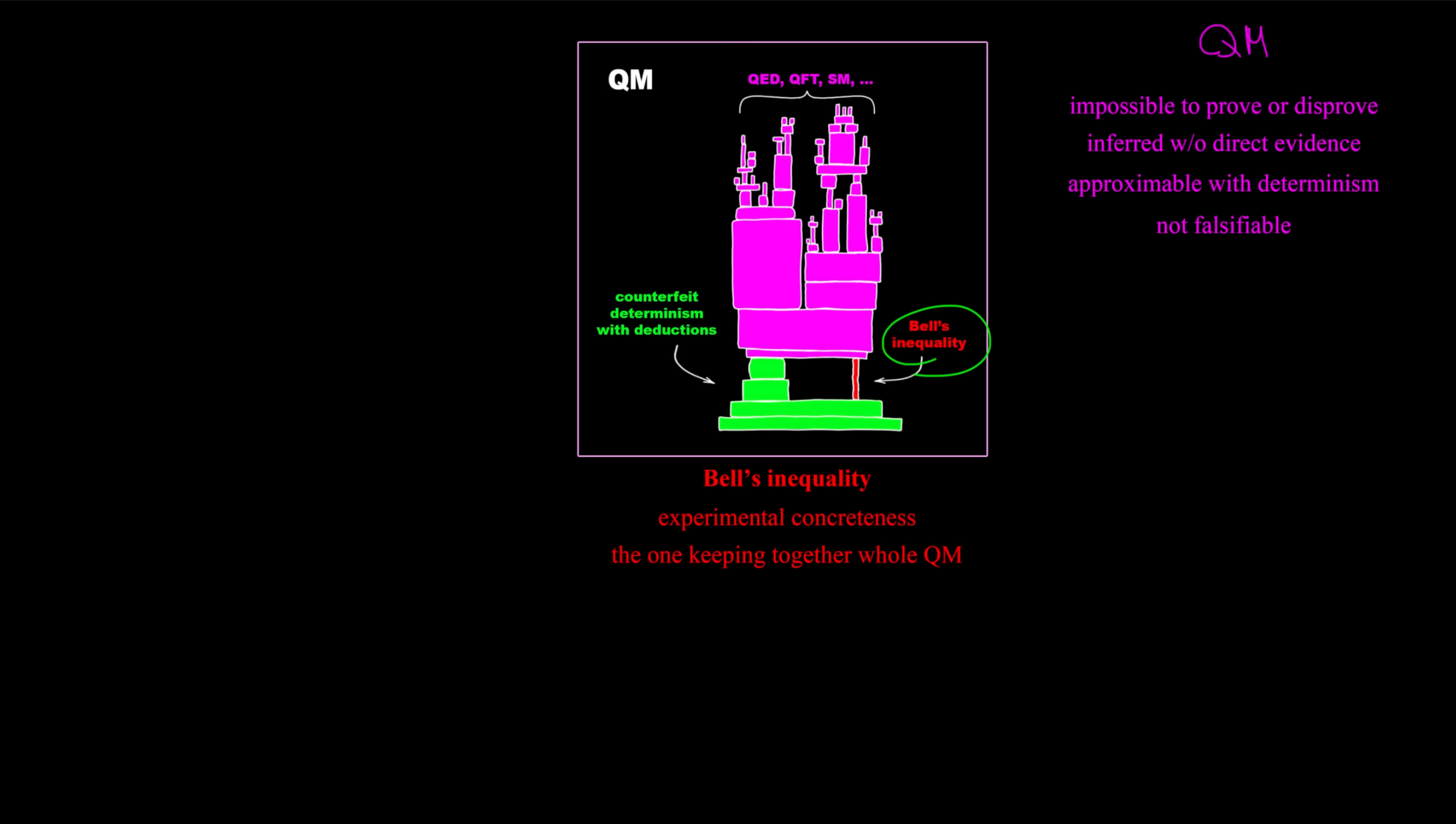Quantum mechanics holds tight to Bell inequality since it is the one keeping together the whole theory. Here indeed, it seems that quantum mechanics shows some degree of correlation between systems that looks impossible for classical physics. The current paradigm states that quantum mechanics is proved by Bell inequality and we have to go back to 1935 with the famous EPR paper to see how it's possible.